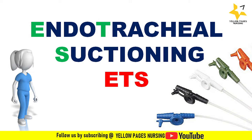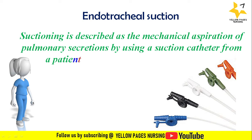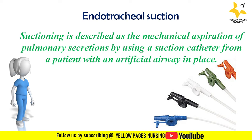What is endotracheal suctioning? Suctioning is described as the mechanical aspiration of pulmonary secretions using a suction catheter from a patient with an artificial airway in place. Here, the artificial airway for suctioning is the endotracheal tube.